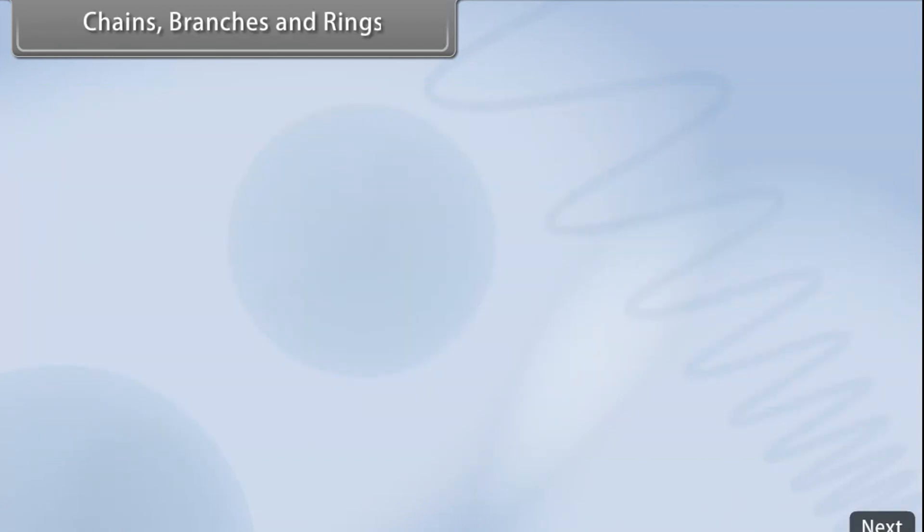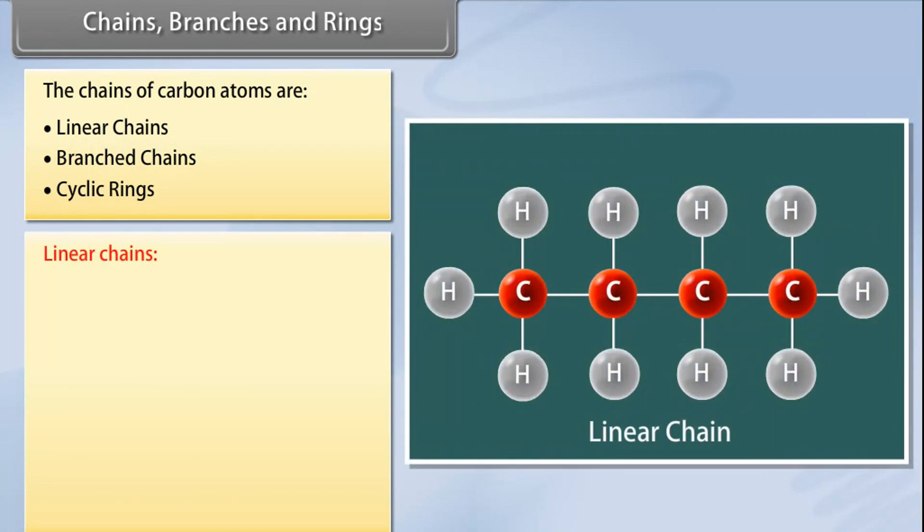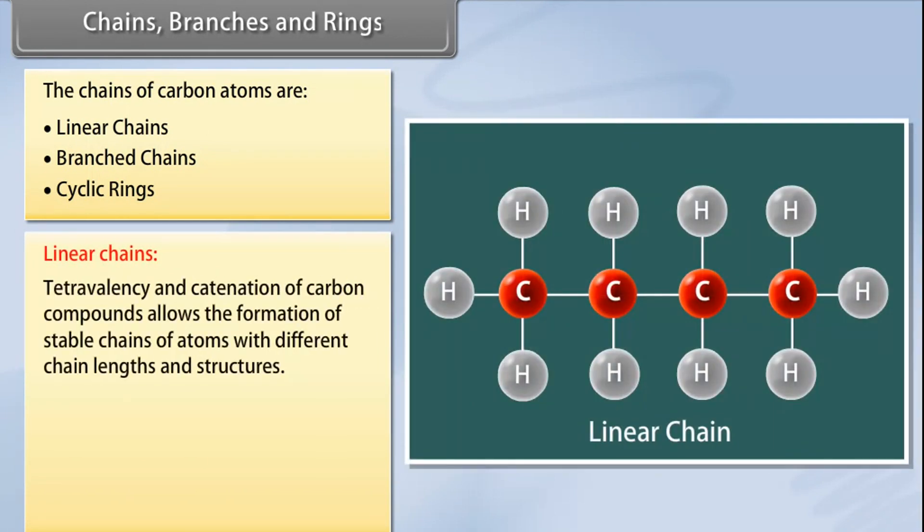Chains, branches, and rings. Many compounds contain carbon atoms that are linked with each other. The chains of carbon atoms are linear chains, branched chains, and cyclic rings. Linear chains: Tetravalency and catenation of carbon compounds allow the formation of stable chains of atoms with different chain lengths and structures.